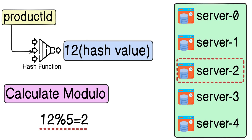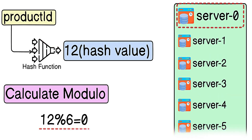But there is a problem with this approach. What happens when a cache server fails or a new one is added? With 5 cache servers using our hash function, everything works fine. But if we add a 6th server to handle more traffic, since our formula depends on the total number of cache nodes, adding one server completely changes how data is assigned. A product ID previously mapped to cache server 2 might now go to server 0. Due to this, most keys point to different locations, our cache hit ratio drops, and we end up querying the database instead — which further increases the load on our system.